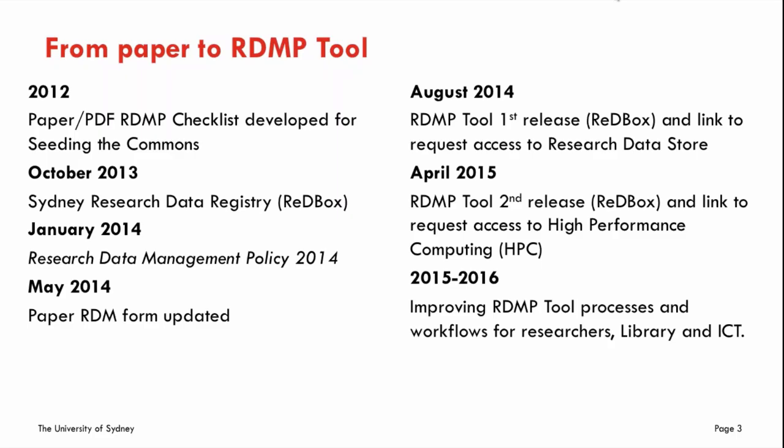That came in with the integration of requests for storage, and really the pilot just continued to grow. The next major release was in April 2015, integrating with a request to use high-performance computing. Since then, there have been a lot of additional enhancements, integrations, and improvements, trying to fix the workflow so that it's as easy for researchers to use as possible. At the moment we don't have as many completed plans as Curtin — about 680 completed — and that's per project. Researchers should complete an RDMP on a project basis and get allocated storage on a project basis. We do have about 2,000 plans in the system.